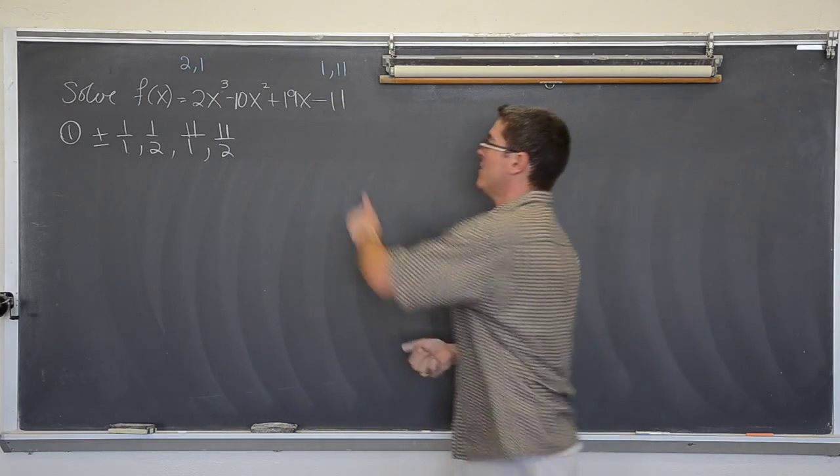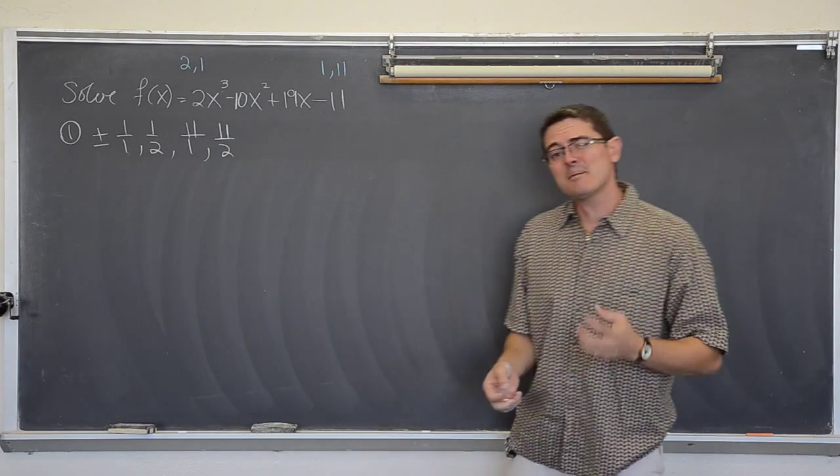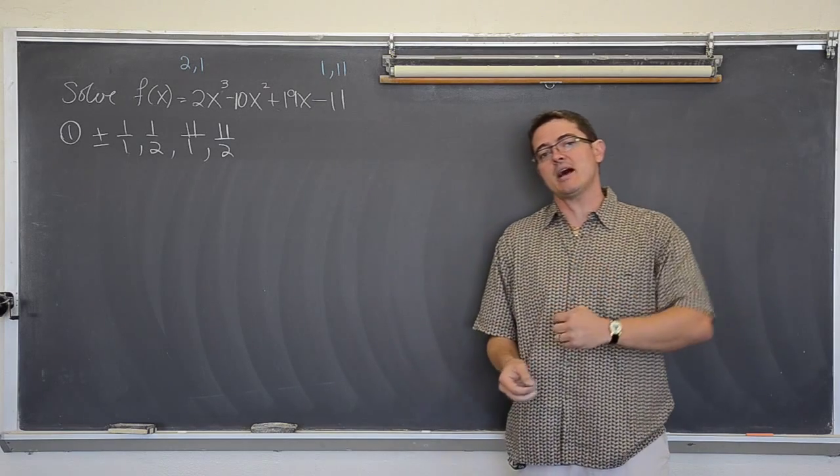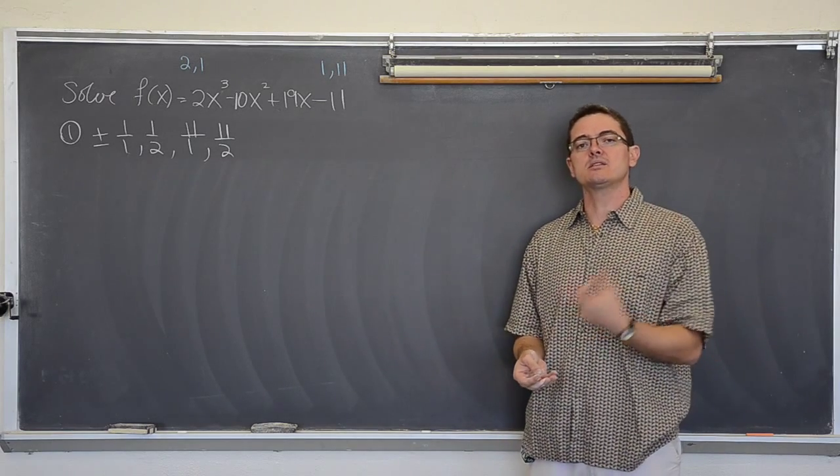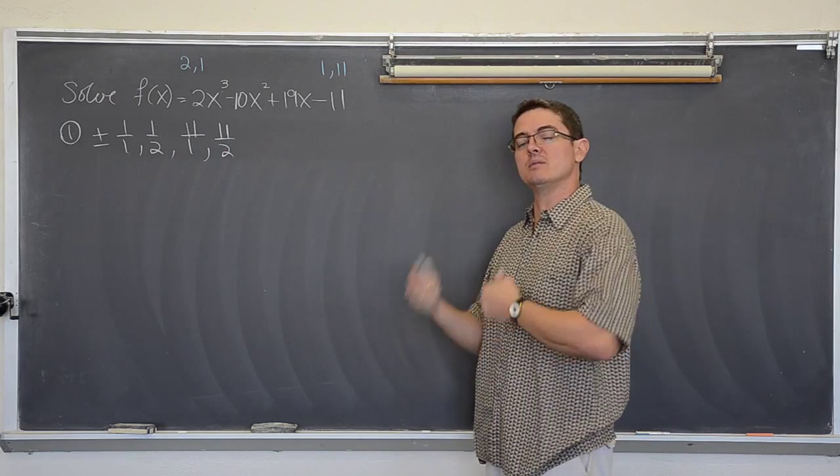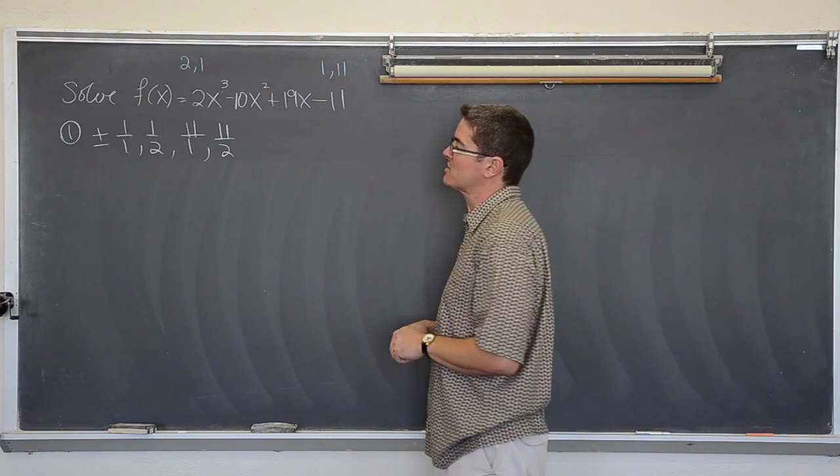Great! So even though both of these numbers are prime, I actually have eight possible numbers that I might have to do synthetic division with until I find a remainder of zero, which is going to be one of my solutions, one of my x-intercepts.